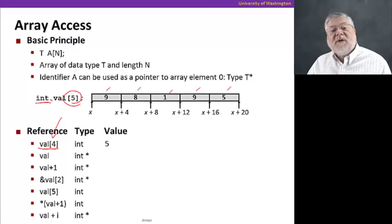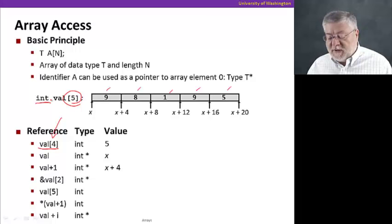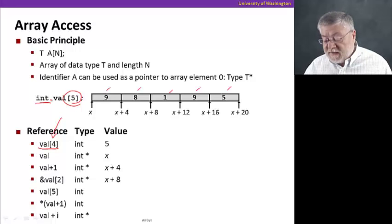The next example, just using the word val, the name of the array, is going to give us an address, an address to the starting point of the array. That'll be the value x, wherever we happen to start the array in memory. Val plus one is also a pointer. Because val is an address, when we add one to it, we do pointer arithmetic. These are of type int, so we will add four to x. That value is x plus four. We have the address of the second index of the array, or the third element, and that would be x plus eight.